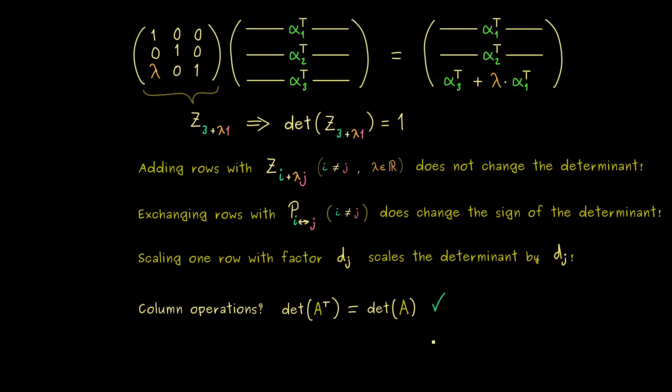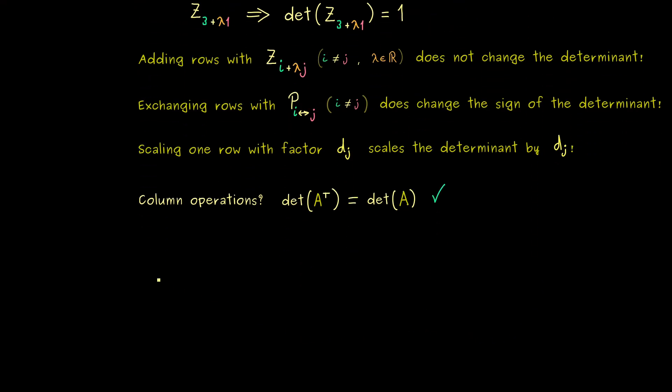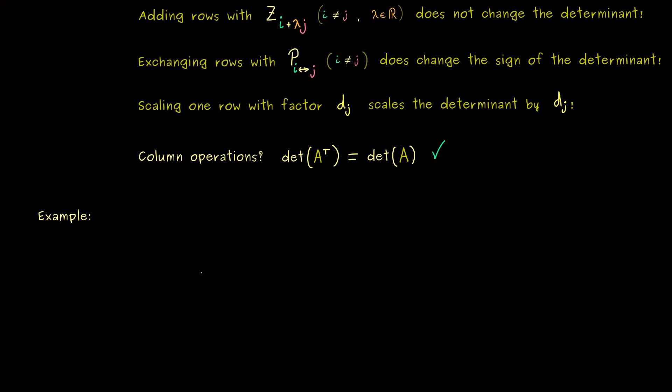So in other words column operations for the determinant are now also allowed. Ok, and with all that I would say let's go for an example. So let's do a nice calculation of a 5 times 5 determinant.